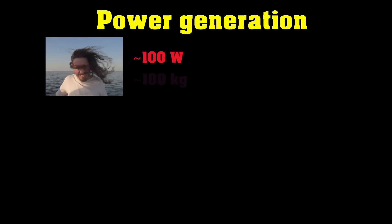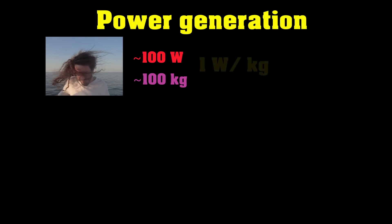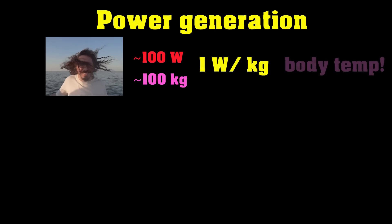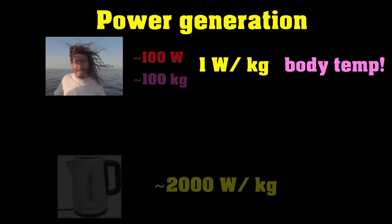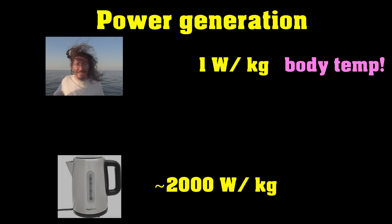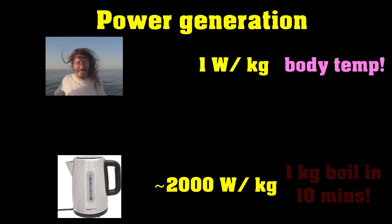For reference, humans run at about 100 watts and weigh about 100 kilos, so that's roughly 1 watt per kilo. And that'll keep your body temperature at a fairly stable 30 degrees Celsius. A kettle runs at about 2,000 watts and will boil 1 kilo of water in about 10 minutes.